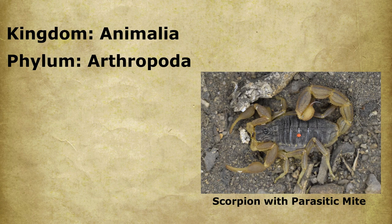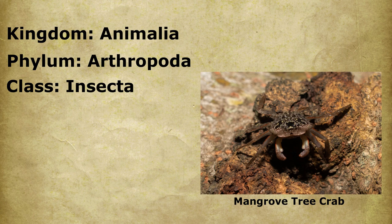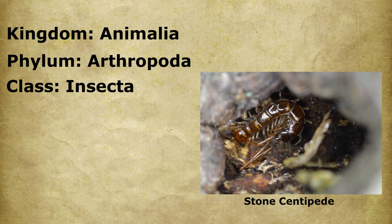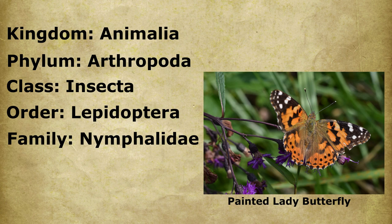Monarch butterflies are in the Kingdom Animalia as before, but this time they're going to be in the Phylum Arthropoda, which is where you're going to find all our exoskeleton creepy crawlies. Within the Phylum Arthropoda, they're going to be in the Class Insecta, which are our insects. Other classes in this phylum include Arachnida, which are the arachnids; Crustacea, which are the crustaceans; millipedes have their own class; centipedes have their own class; etc. Within the Class Insecta, butterflies and moths are the Order Lepidoptera, and within Lepidoptera, you're going to find monarch butterflies in the Family Nymphalidae, which are the brush-footed butterflies.